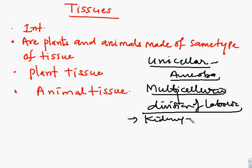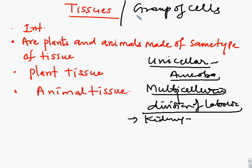So in animals or plants, we have a group of cells. A group of cells that can perform different functions is called tissue.